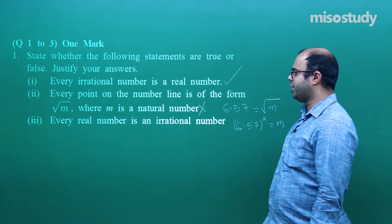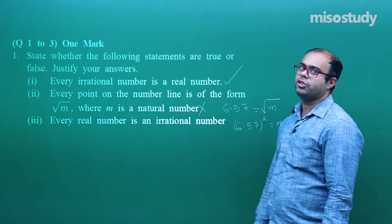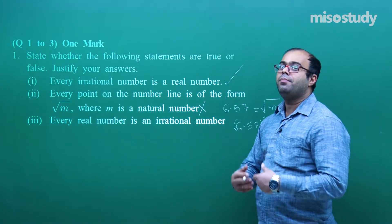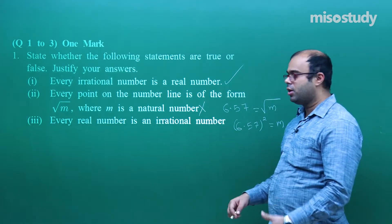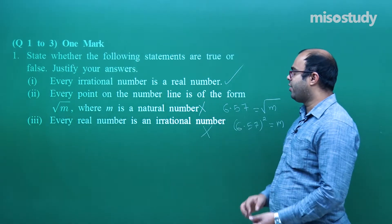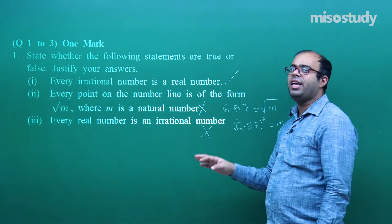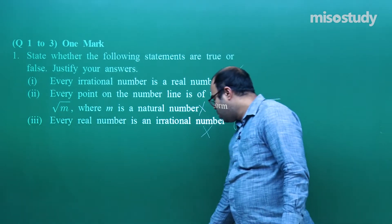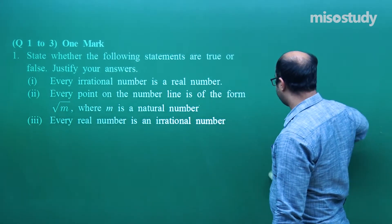The third statement: every real number is an irrational number. This is wrong. A real number may be an irrational number or may be a rational number, so we cannot say every real number is irrational. Instead, we can say every irrational number is a real number. This was a one-mark true/false question.